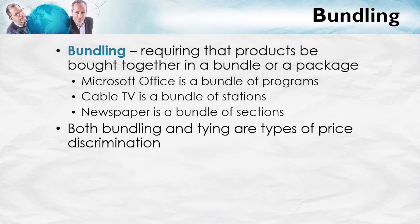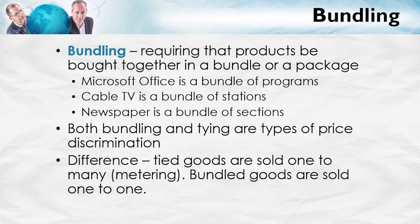Both bundling and tying are types of price discrimination. The difference is that tied goods are sold one to many — the quantity of the tied good is variable; you can buy a little bit of ink or a lot. The tied good is a form of metering. In bundling, the bundled goods are sold one to one in fixed proportion — you just get the package. You buy the Microsoft Office package; you're not charged extra every time you use Excel, which would be a type of tying. Instead, you simply get Excel, PowerPoint, Word, and other features together in a bundle. The same is usually true with cable TV and newspapers.